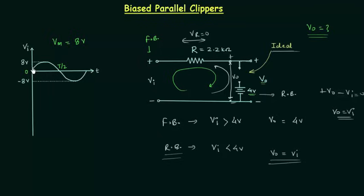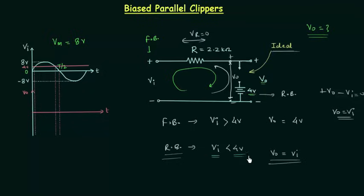Now I will plot the output waveform for the first half cycle. I extend the intersection points at 4 volts to help plot the waveform. When Vi is less than 4 volts — covering the rising and falling sections of the waveform — the output voltage equals Vi, so the output follows the input. When Vi is greater than 4 volts, covering the peak section, the output voltage is constant at 4 volts throughout that time interval.